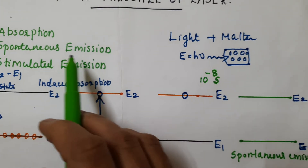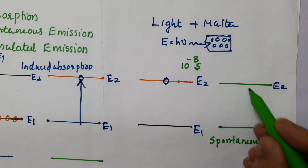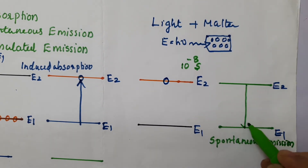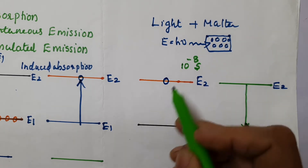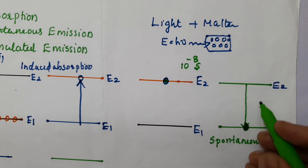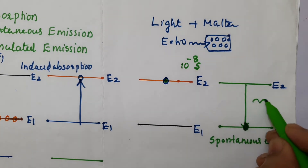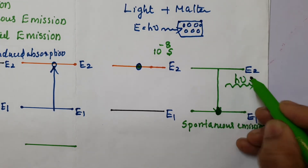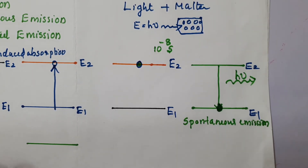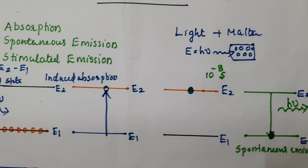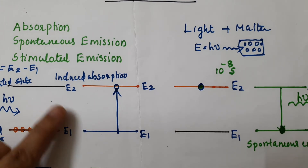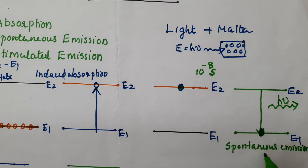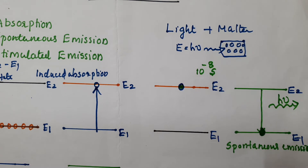In spontaneous emission, the atom is in the excited state and it spontaneously emits the hν photon it had absorbed, returning to the ground state. So the first process is induced absorption and the second is spontaneous emission, where the atom spontaneously emits the photons it absorbed.